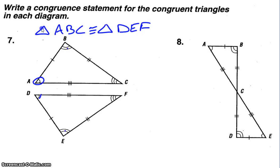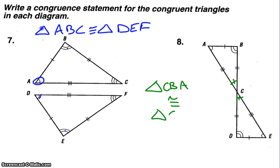In number 8, the only angle not marked congruent would be angle C because of vertical angles. Now we can make a congruent statement. The order of the first triangle doesn't matter — for example, CBA for the first triangle — then C is corresponding to C in the other triangle, and DE based on the marks of the diagram.